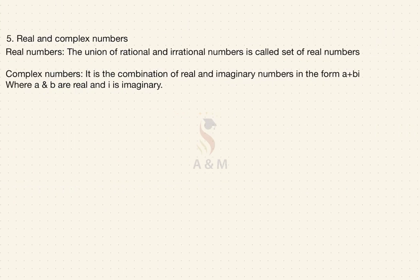Next type is real and complex numbers. Real number: the union of rational and irrational numbers is called the set of real numbers. Complex number: it is a combination of real and imaginary numbers in the form A + Bi, where A and B are real and i is imaginary. These are the types of numbers.